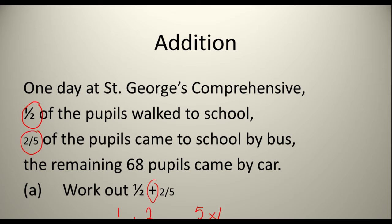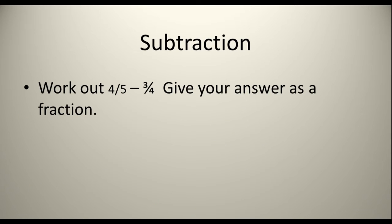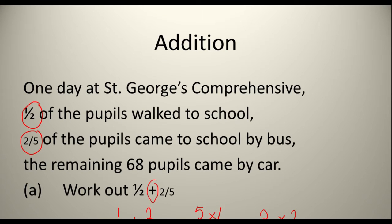So 5 times 1 and 5 times 2. Because whatever you do to the top you have to do to the bottom. And you add that to 2 times 2 and 2 times 5. So 5 times 1 is 5, 5 times 2 is 10. Plus 2 times 2 which is 4, and 2 times 5 which is 10. 5 add 4 is 9.